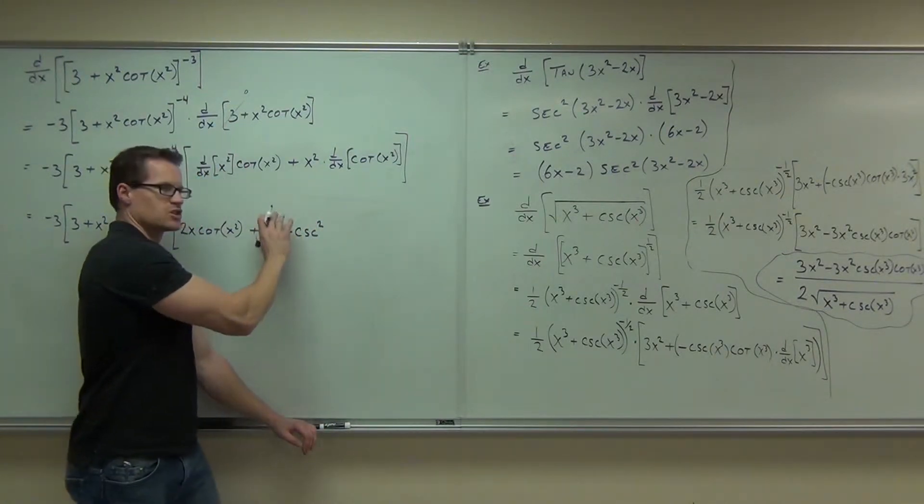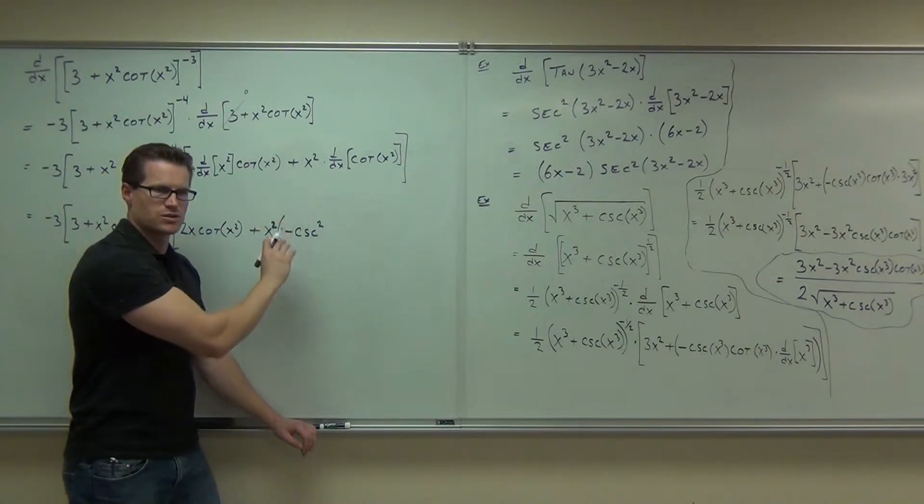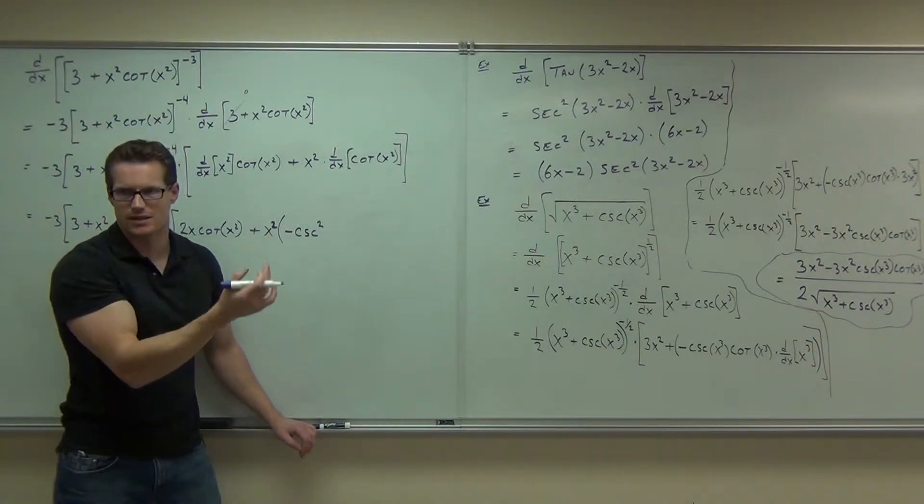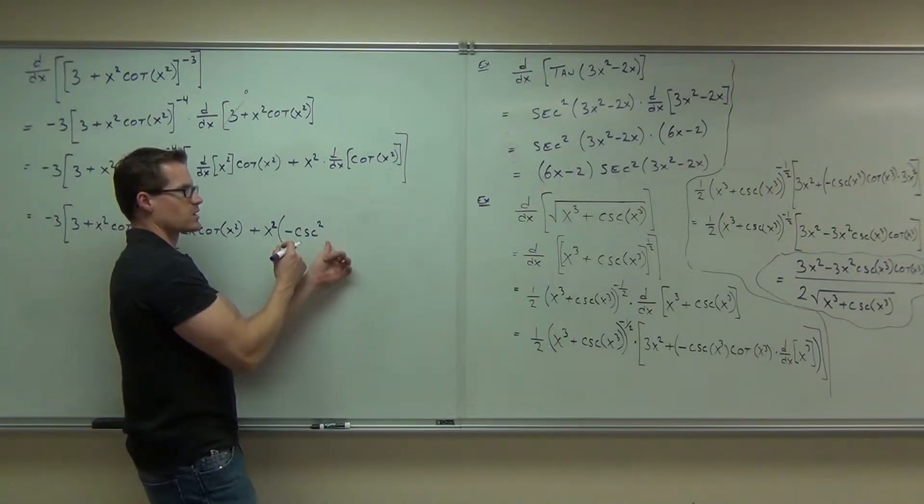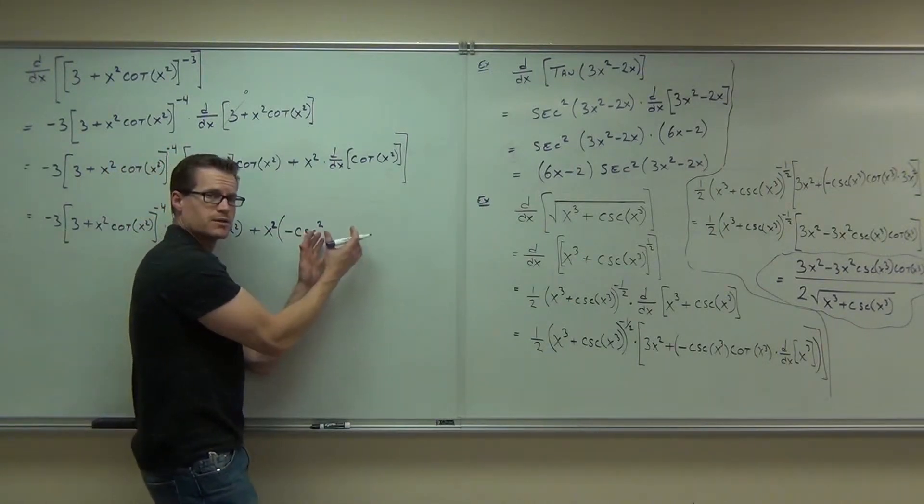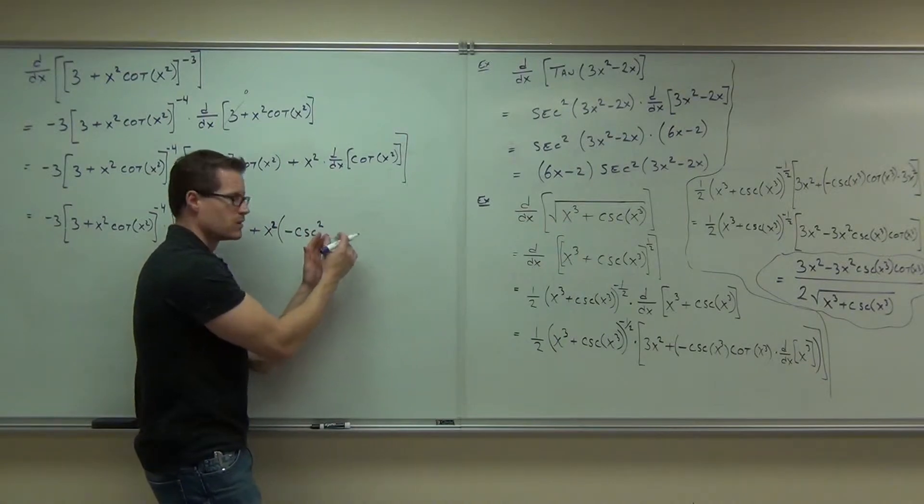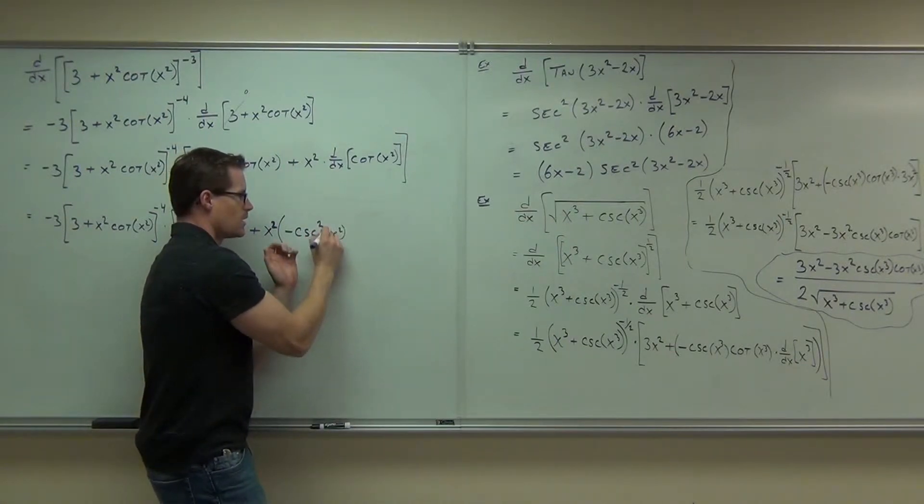So, I'd like it in parenthesis just because I know it's a negative. I don't want to misconstrue that as a minus sign. That's the only reason I have it here. So, negative cosecant squared of, oh, of what folks? Of what? 2x or x squared? x squared. Good.